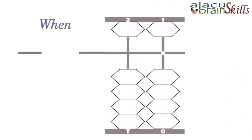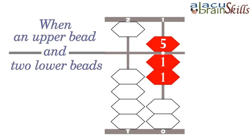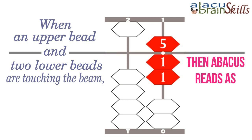When an upper bead and two lower beads are touching the beam, then the Abacus reads as 7.